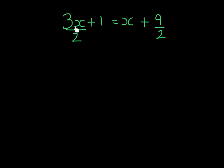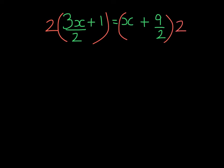Now back to our example. If we multiplied by 2, we would get rid of these annoying denominators. So we're going to multiply the left-hand side by 2 and the right-hand side by 2. Each term, even the ones that don't have denominators. All of the ingredients, remember.